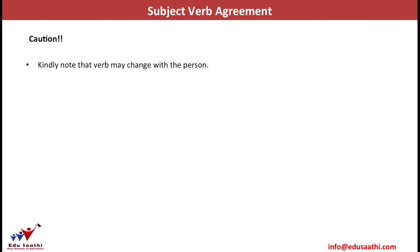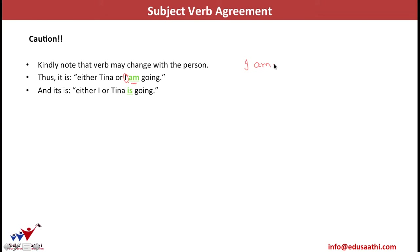Note that the verb must also agree in person. For example, 'Either Tina or I am going,' because the subject closest to the verb is 'I,' which takes 'am.' But if the sentence is 'Either I or Tina is going,' then since Tina is third person, the verb changes to 'is.'